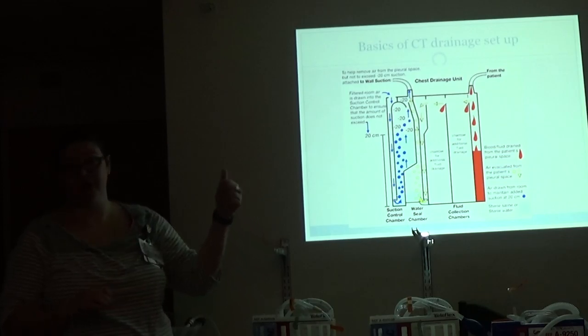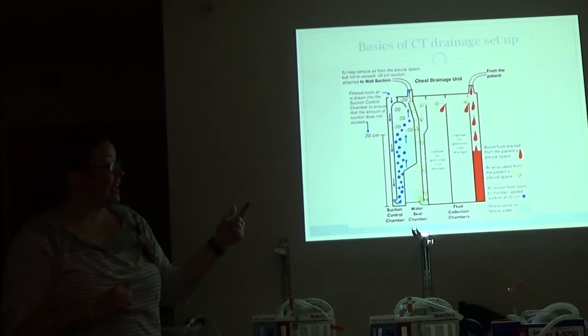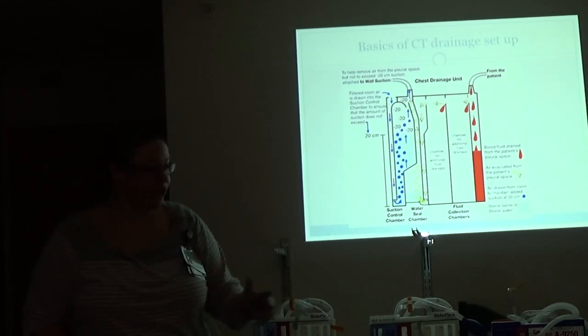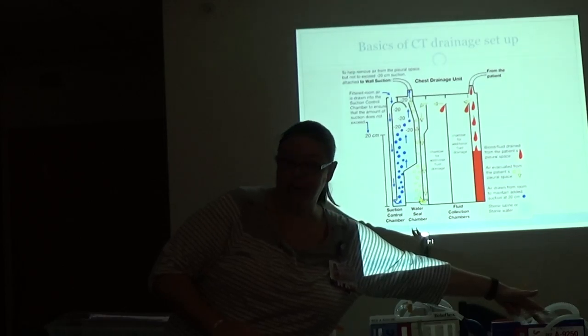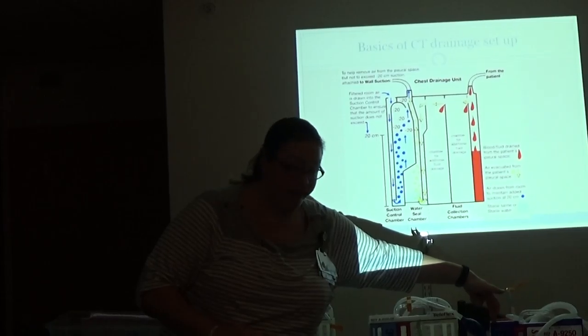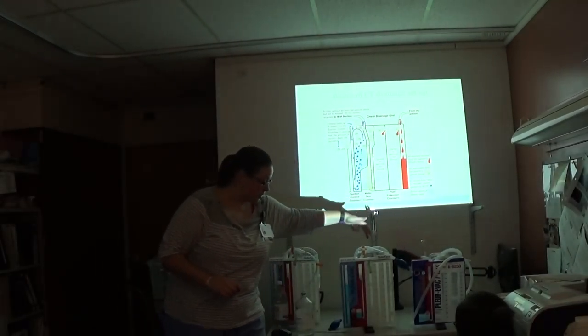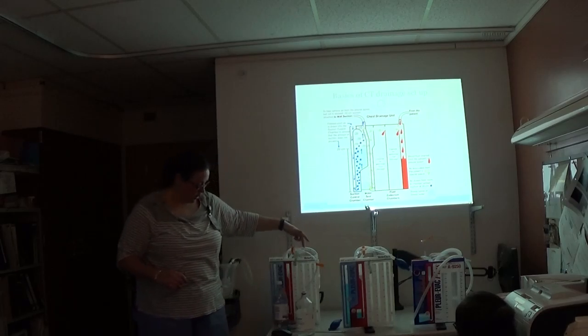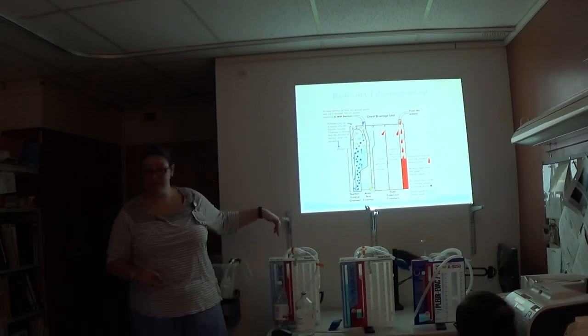So that first bottle is for your drainage. The second bottle is for your water seal. And the third bottle is for your suction. They make it really easy. So your first bottle is white, drainage. Second bottle is red, water seal. Third bottle is blue for suction. So white, red, and blue, drainage, water seal, suction.